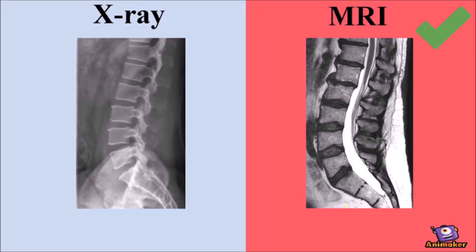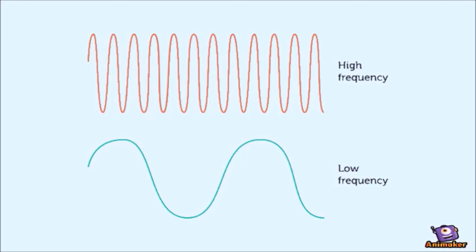Magnetic energy isn't harmful to your body, as far as we know. X-ray imaging, however, uses much higher frequency energy, and the radiation emitted is ionizing, which can cause cell damage if your yearly doses aren't within safe limits — though that is extremely rare.